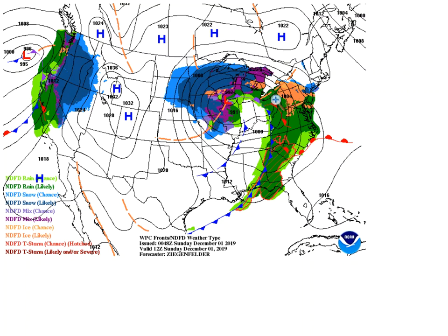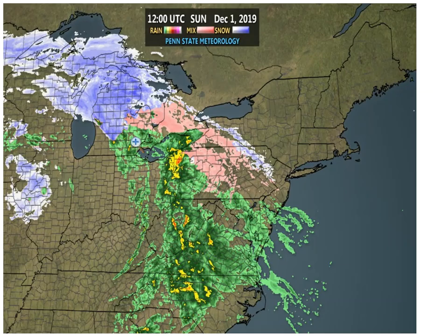East of the low, WPC was predicting a variety of precipitation types north of the warm front, which fits our conceptual models as warm air overruns cooler air near the surface in that region. WPC had painted much of central Pennsylvania into New York as having a chance of ice. The radar image from 12z on December 1st shows that WPC generally had the right idea, with rain throughout much of western Pennsylvania, but the radar's algorithm suggested a mix was occurring across much of central Pennsylvania into New York. So how could a forecaster have diagnosed this situation ahead of time?